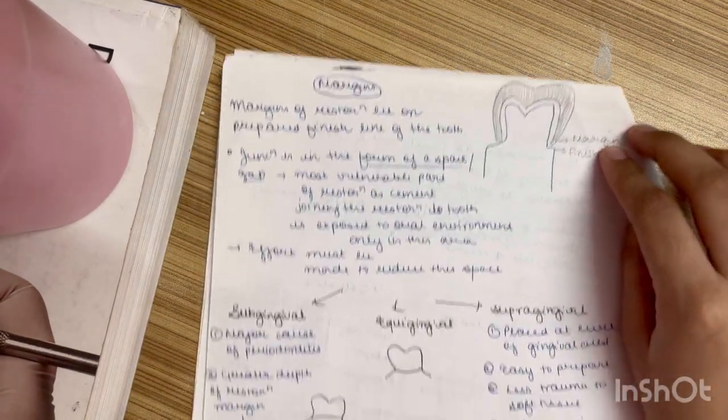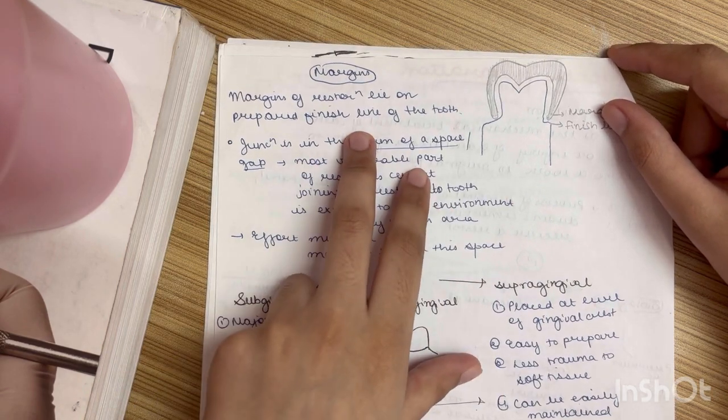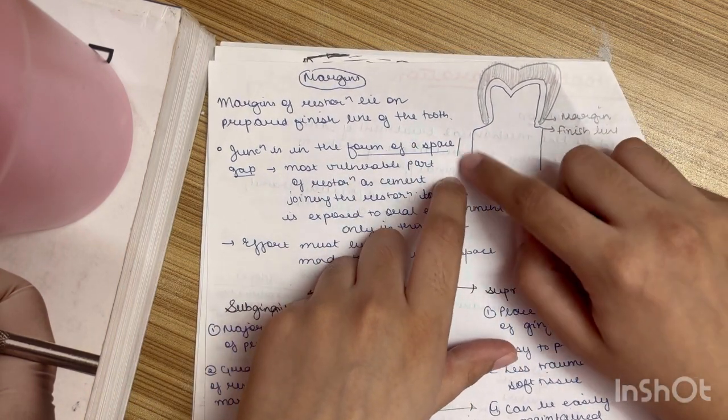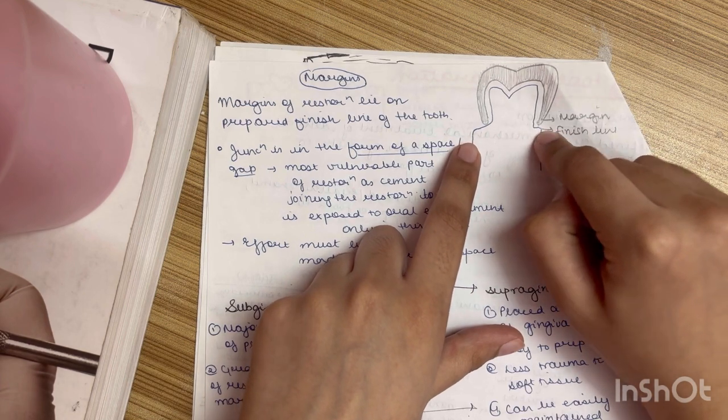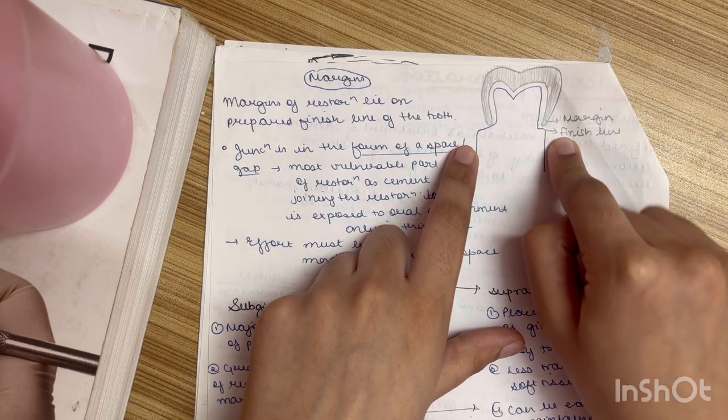You can just write it in the continuation. So what is margin? Margin of a restoration lies on the prepared finish line of the tooth surface. What you can see is in this diagram this is the tooth preparation and I have made the finish line here. So we will place the margin over the finish line.